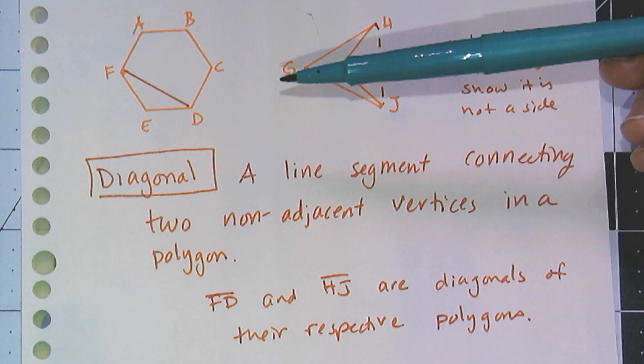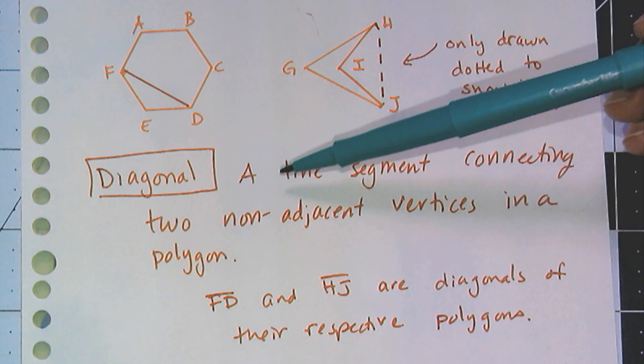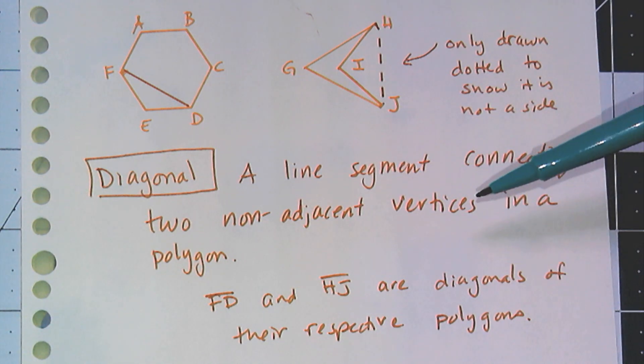So since I mentioned diagonal, let's give the formal definition. A diagonal is a line segment connecting two non-adjacent vertices in a polygon.